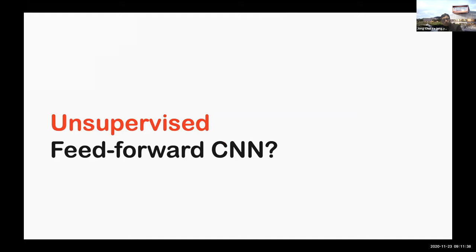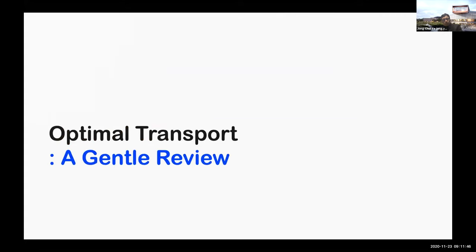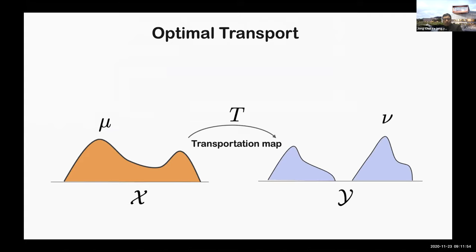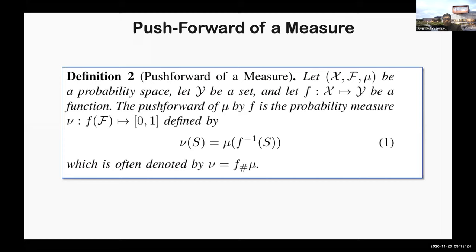The question is: is there any unsupervised feed-forward convolutional neural network approach for inverse problems? To answer this, we need to review optimal transport theory. Optimal transport is concerned with transporting one probability measure to another. Let mu denote the probability measure in sample space X, and nu denote another measure in Y. Then the transportation map T transports measure mu to nu — this operation is represented by T-sharp, often called the push-forward of a measure. Formally, the push-forward of measure mu by a function f is defined using the inverse mapping. However, this is a non-linear operation.